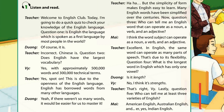Question 3: Who can tell me an English word that can operate as a noun, a verb and an adjective? I think the word 'subject' can operate as noun, verb and adjective. Excellent! In English, the same words can operate as many parts of speech.